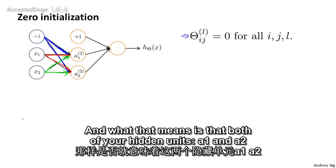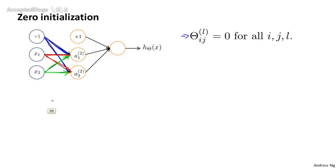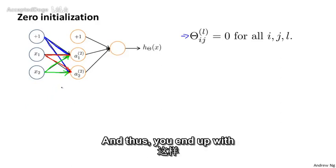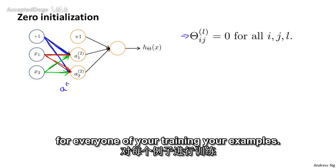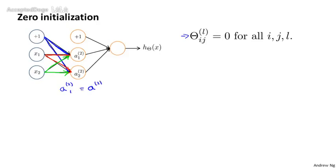What that means is that both of your hidden units, a1 and a2, are going to be computing the same function of your inputs. And thus, for every one of your training examples, you end up with a21 equals a22.